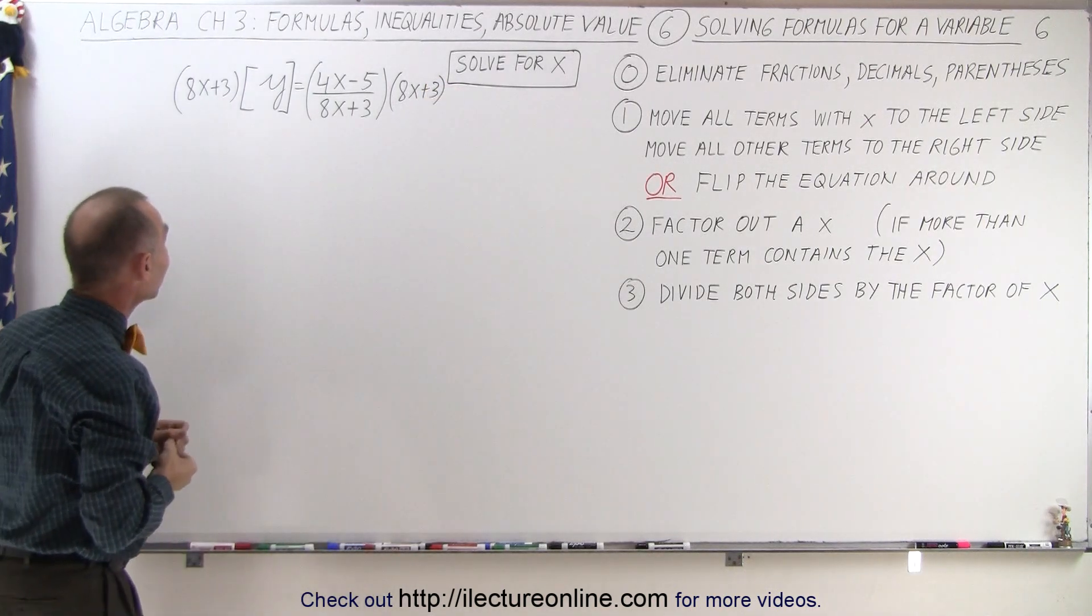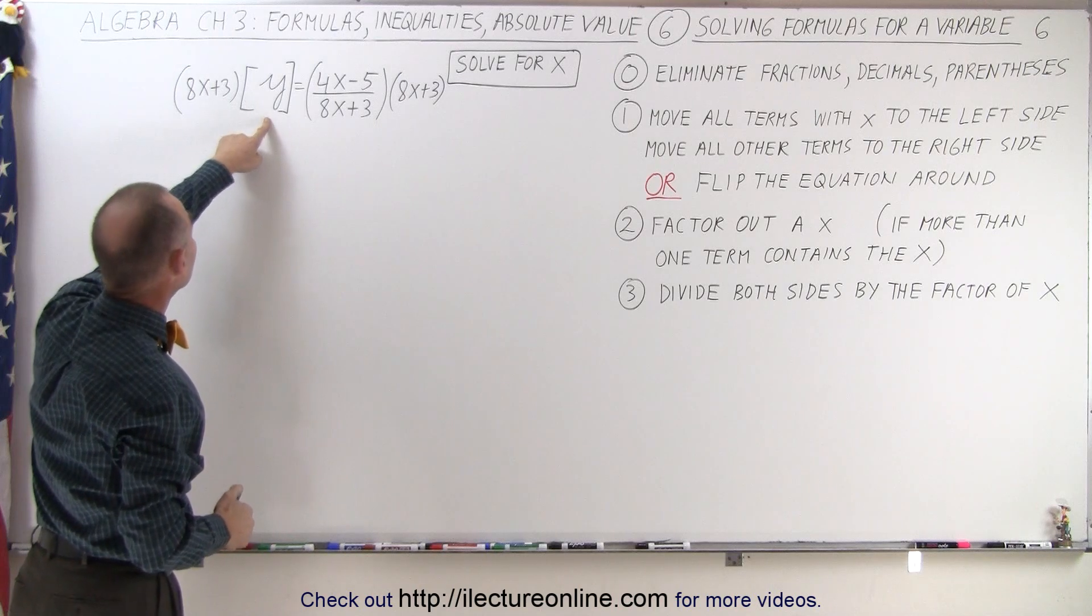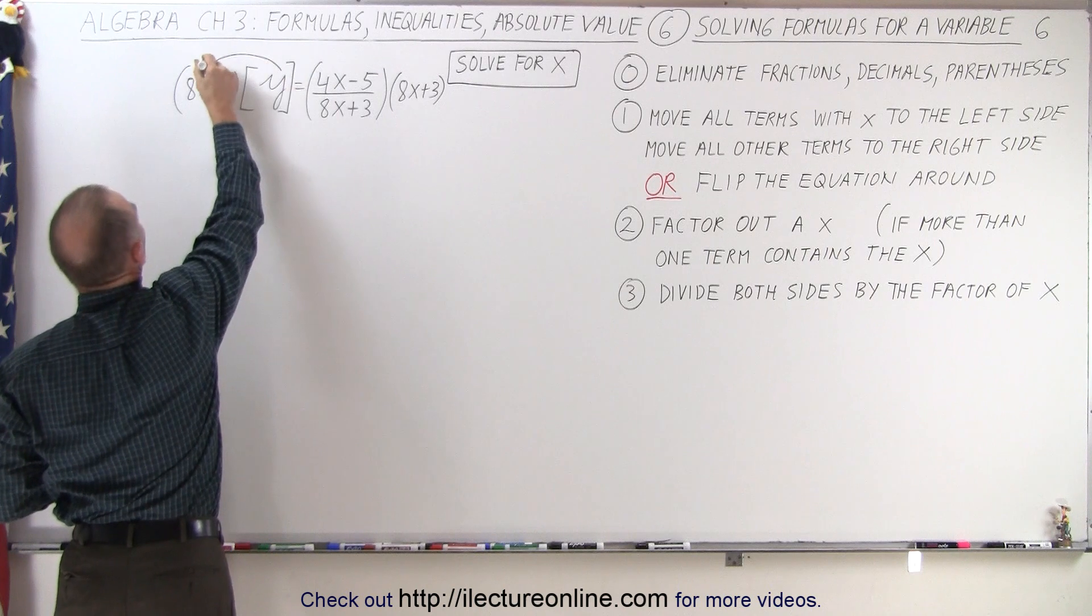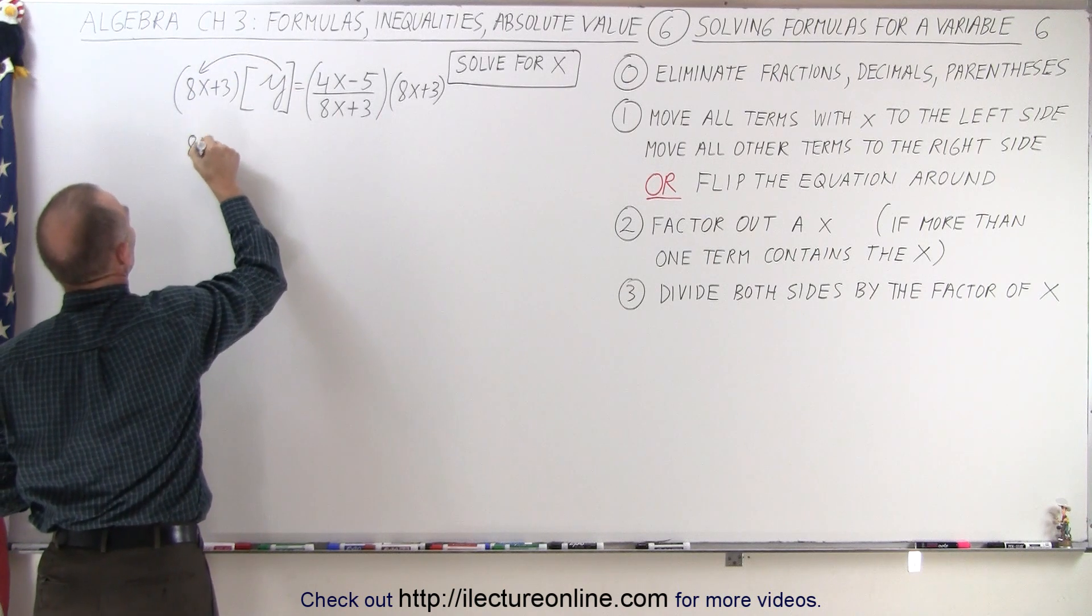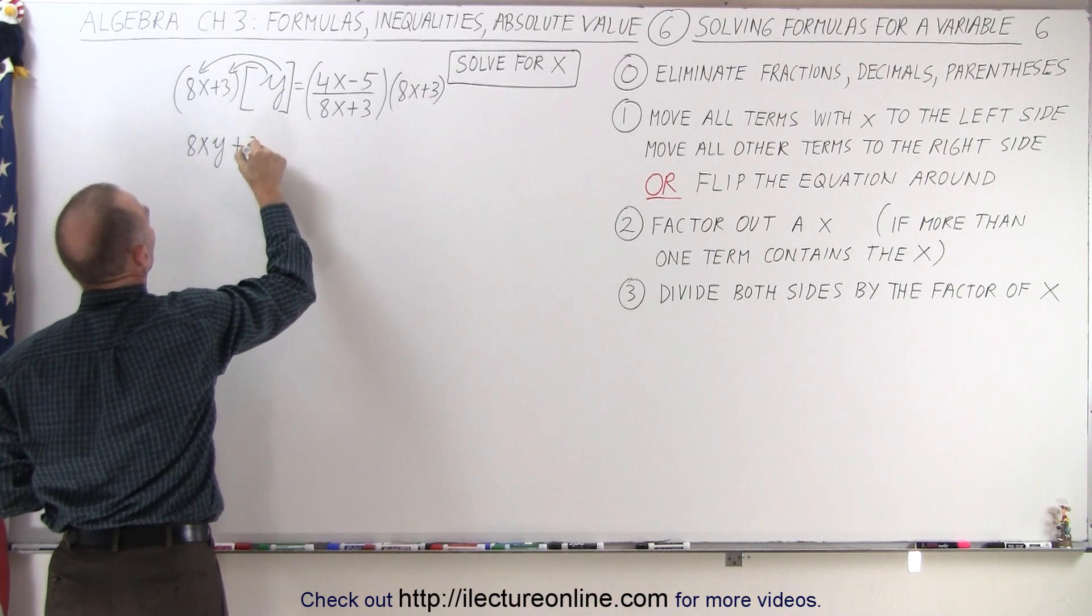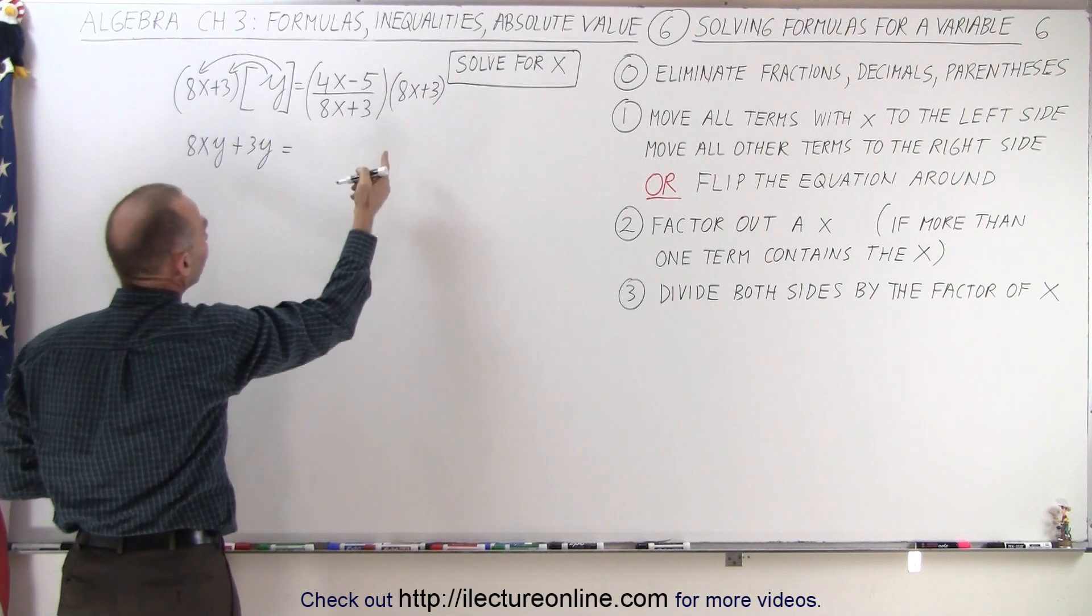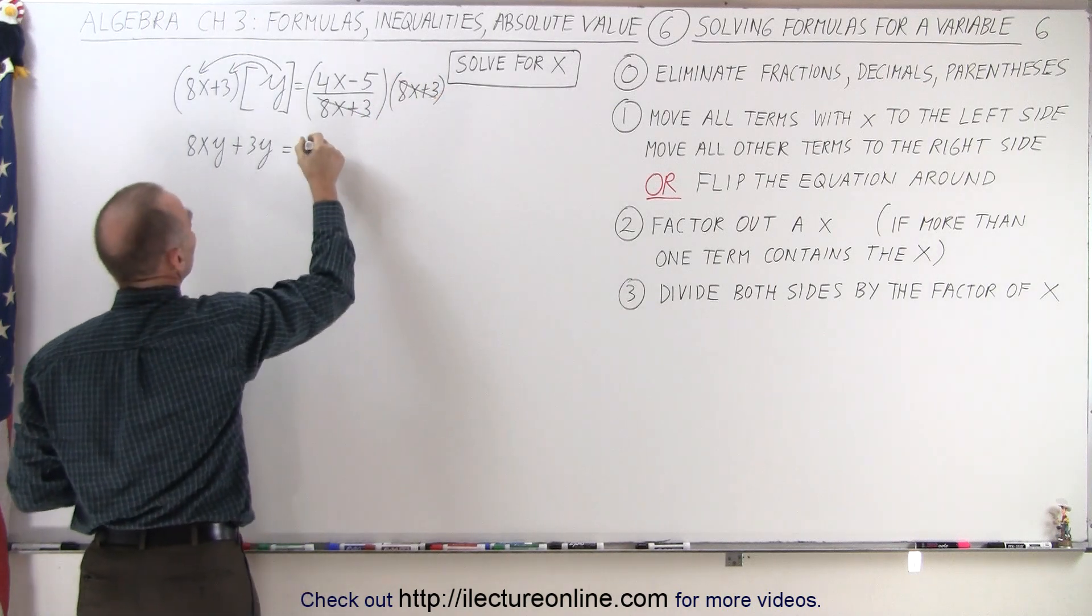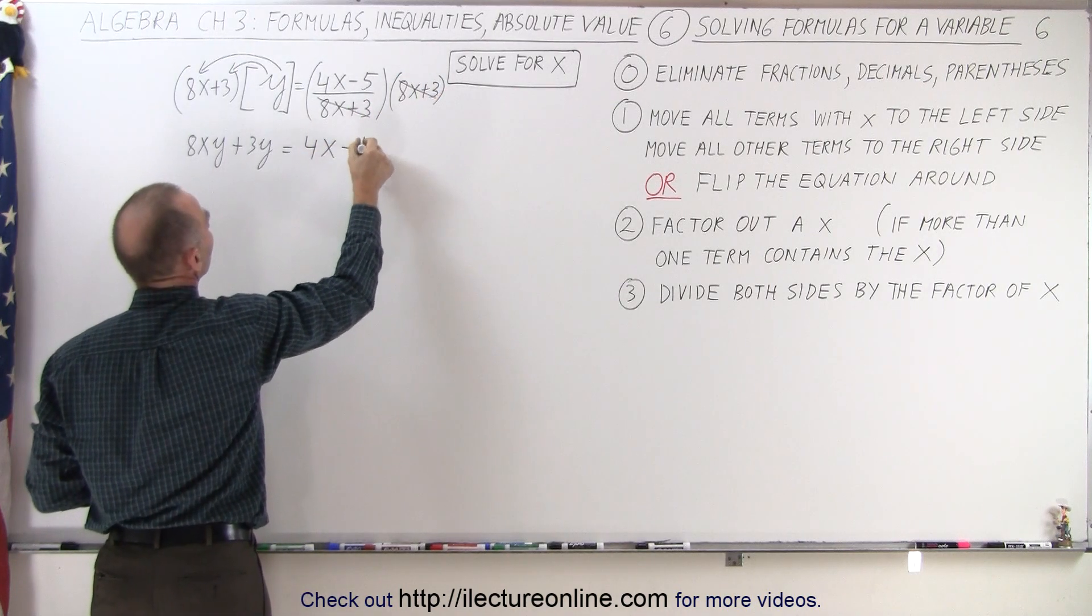Alright, on the left side we're going to multiply the y by each of these two terms right here. So y times 8x becomes 8xy and y multiplied times 3 becomes plus 3y. On the right side, notice that the 8x plus 3 cancels out to 8x plus 3 and we end up with 4x minus 5.